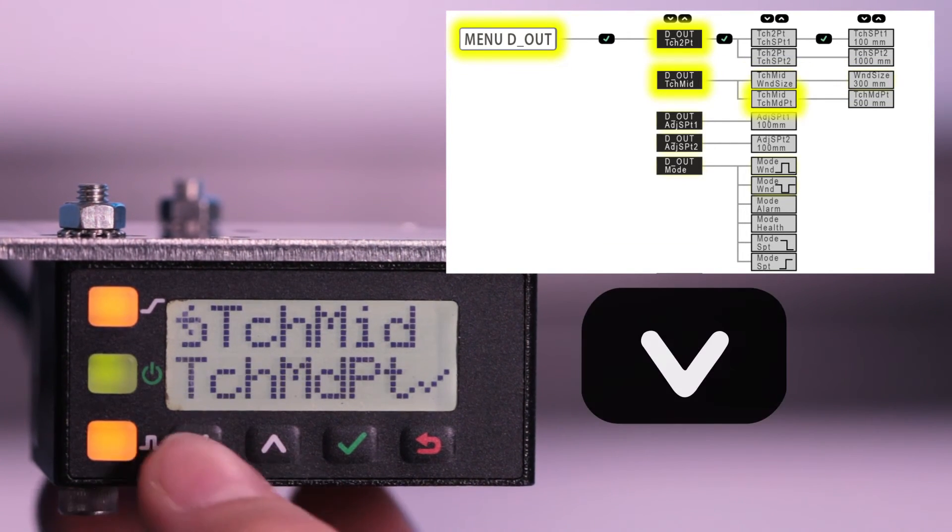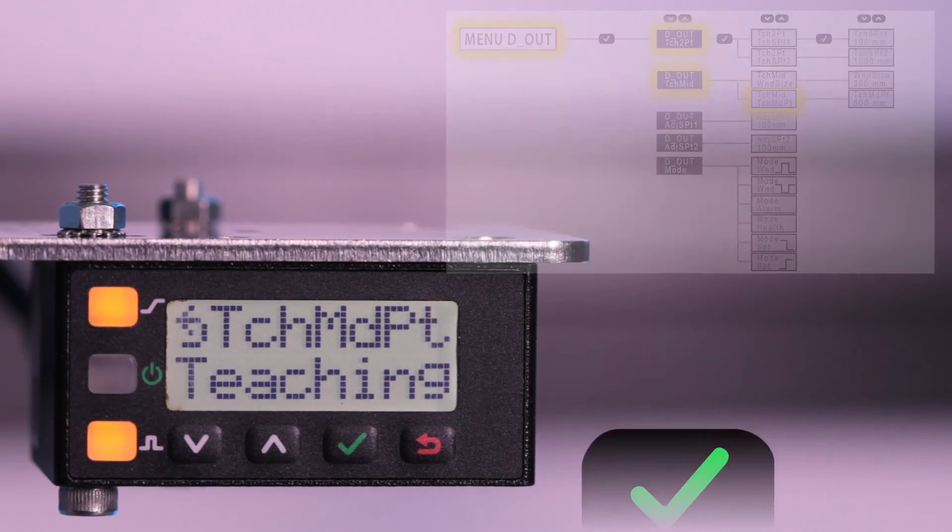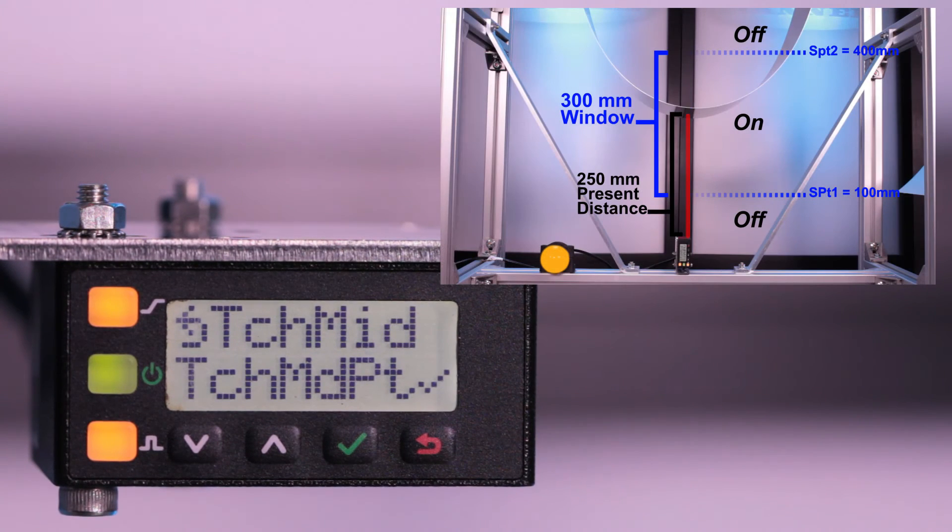Next, click down to teach midpoint and press enter. After a successful teach, the sensor will flash the value taught as the middle of the window.